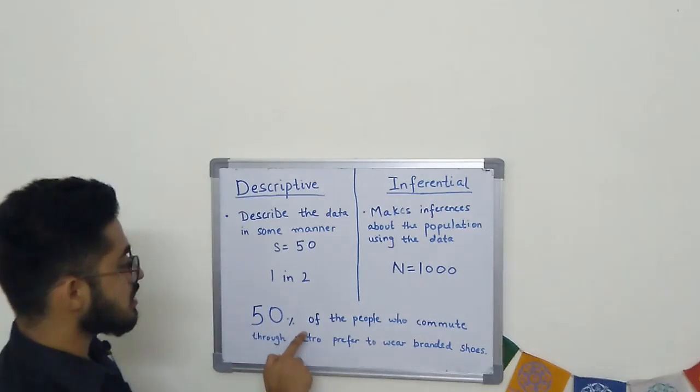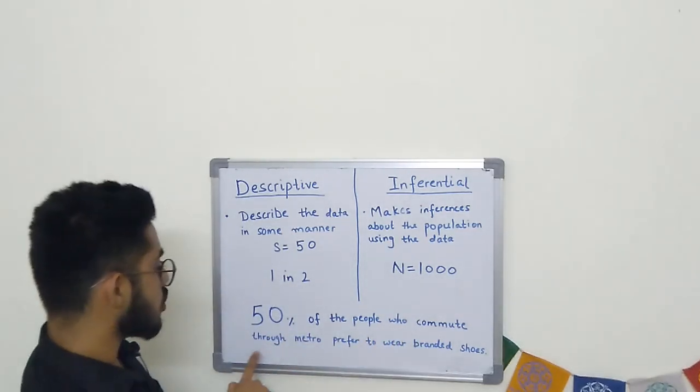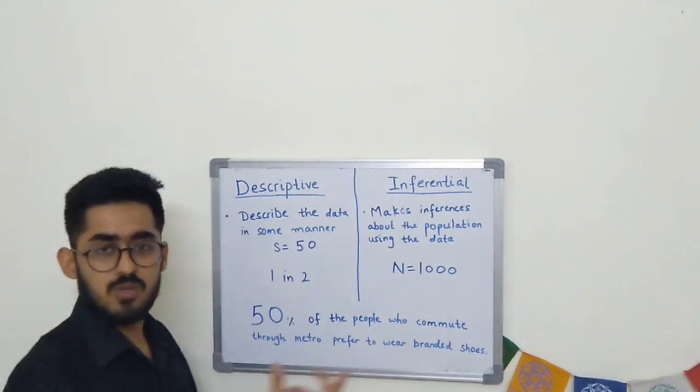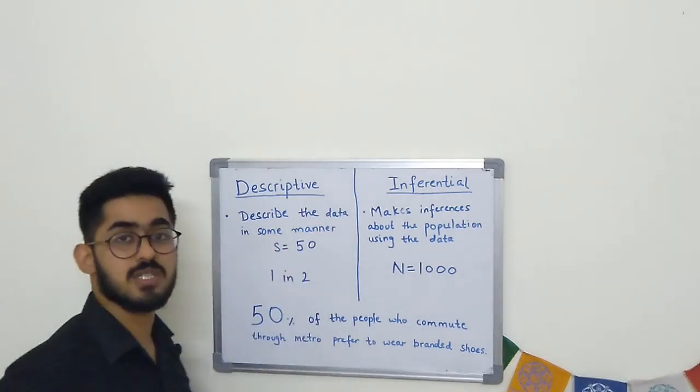Your inference will be that 50% of people who commute through metro prefer to wear branded shoes. This is one example of how descriptive and inferential statistics work.